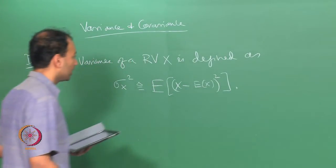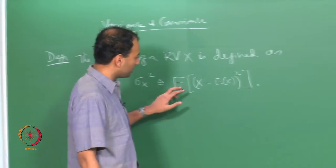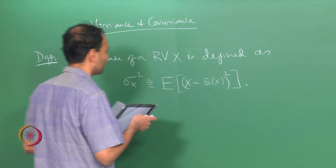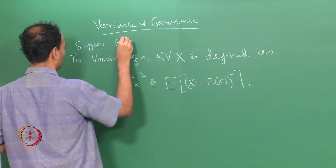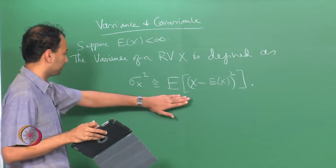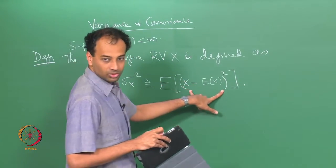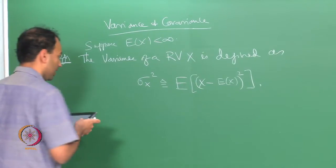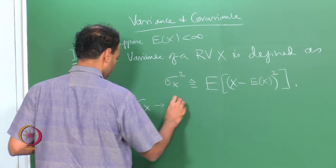The variance of a random variable x is defined as the expected squared variation around the expected value. It is assumed that the expectation of x exists and is finite. The variance is denoted by sigma_x squared, and sigma_x is called the standard deviation.